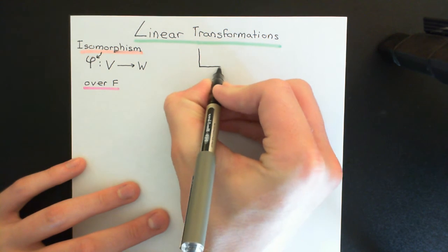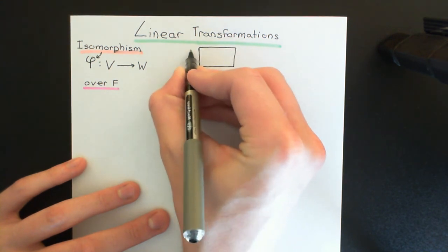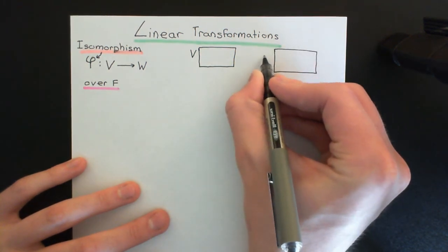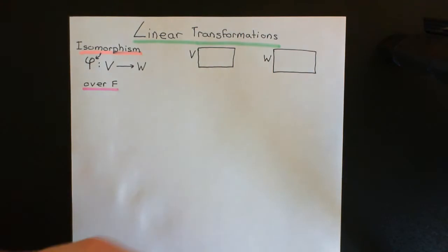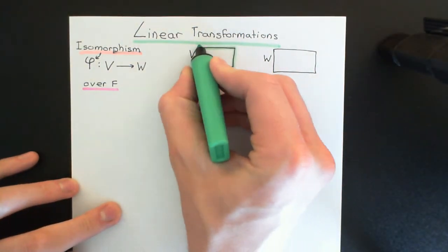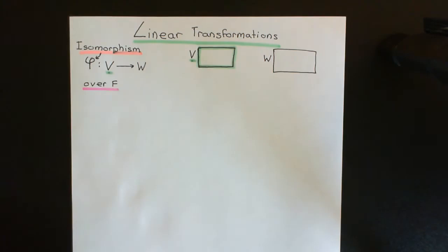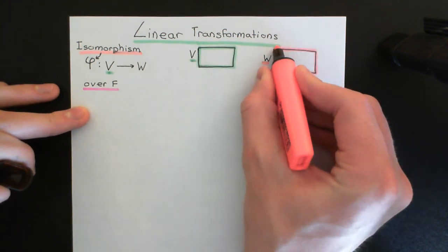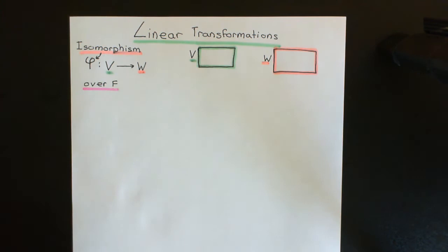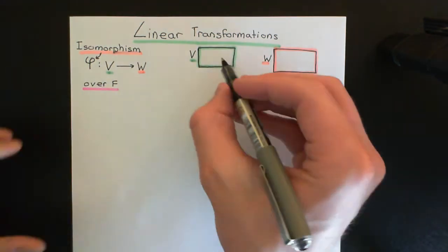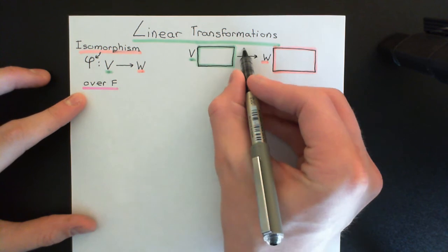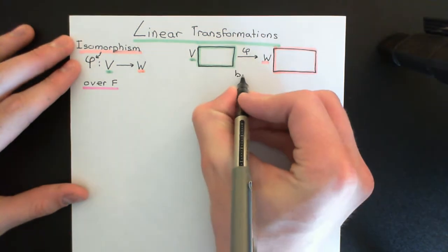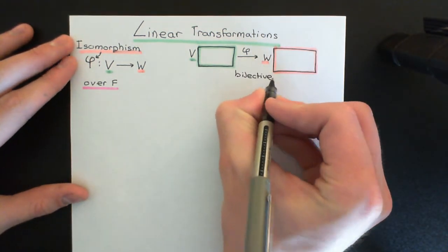I'm going to draw a picture of my two vector spaces. This box denotes my vector space capital V, and then this box over here denotes my vector space capital W. We'll have the vector space capital V denoted in green, and the vector space capital W denoted in red. So the isomorphism phi is this mapping that is going to take all the elements of my vector space capital V and map them onto elements in capital W. The first thing that phi must be is a bijective map — one to one and onto — so every element in the codomain must have one and only one element in the domain being mapped onto it. So it's got a two-sided inverse.